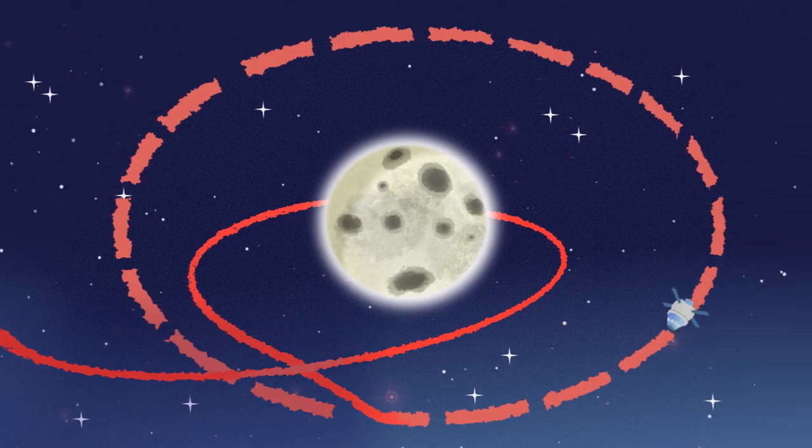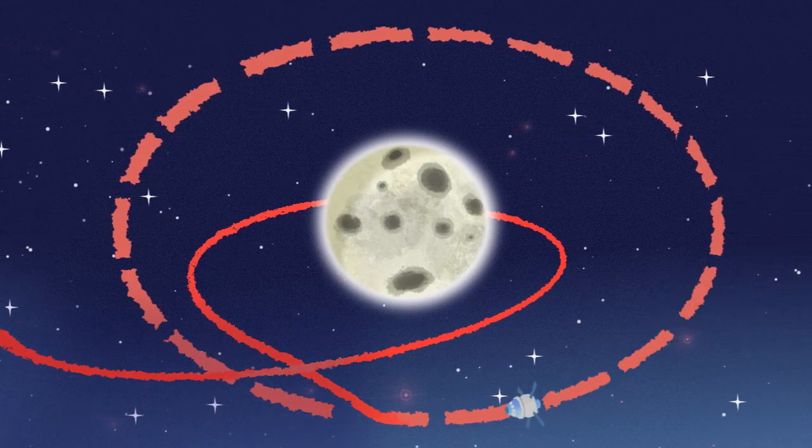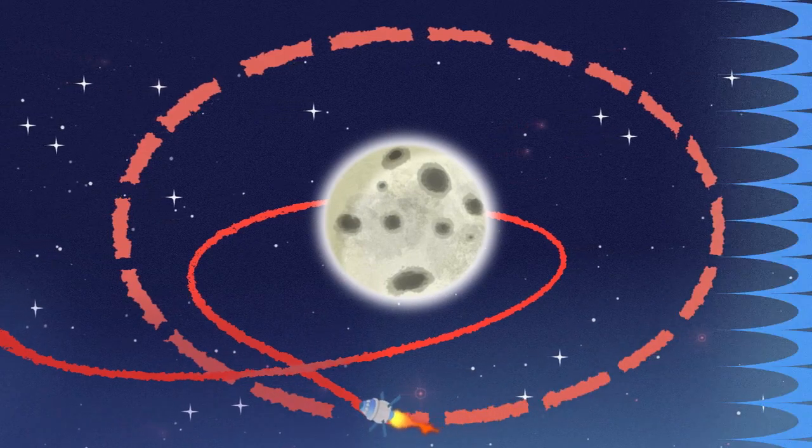Once it's time to come back to Earth, Orion's service module engines are fired to leave distant retrograde orbit, or DRO.